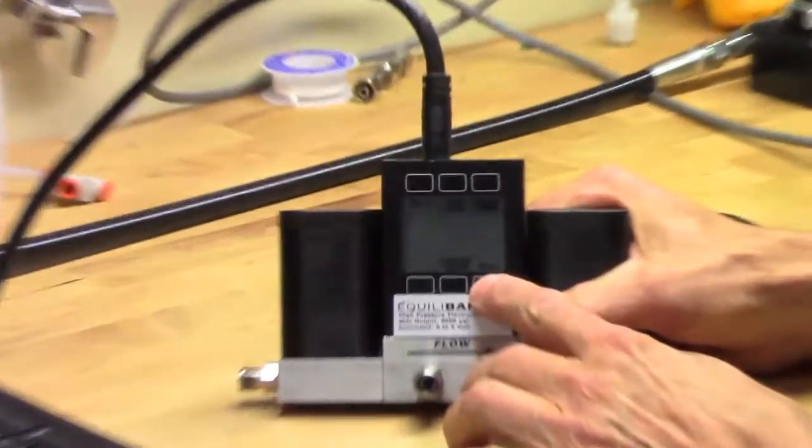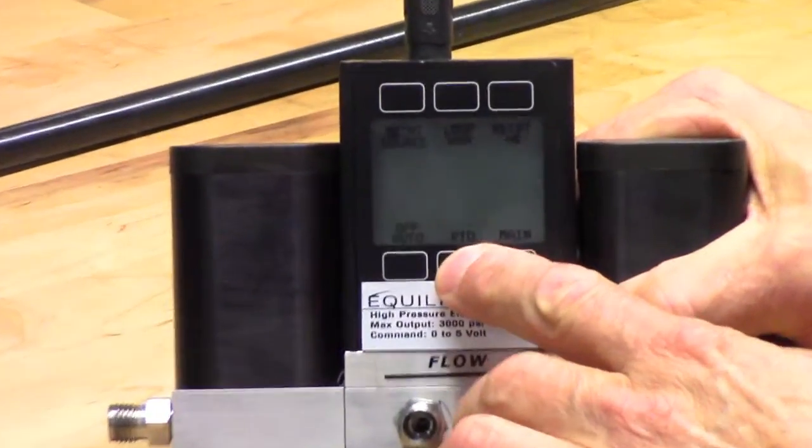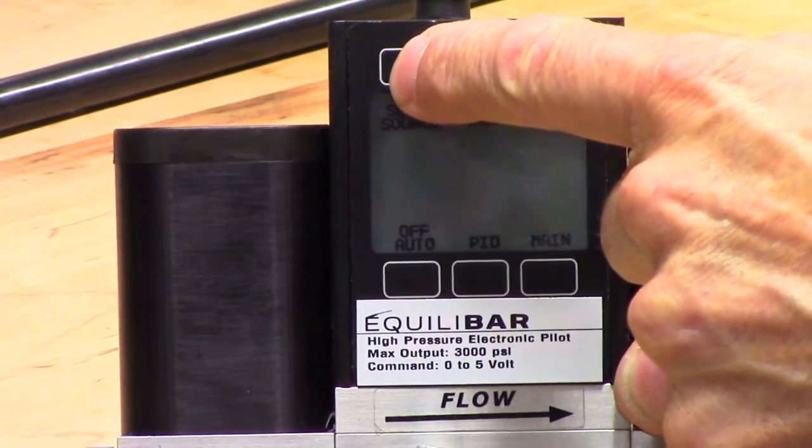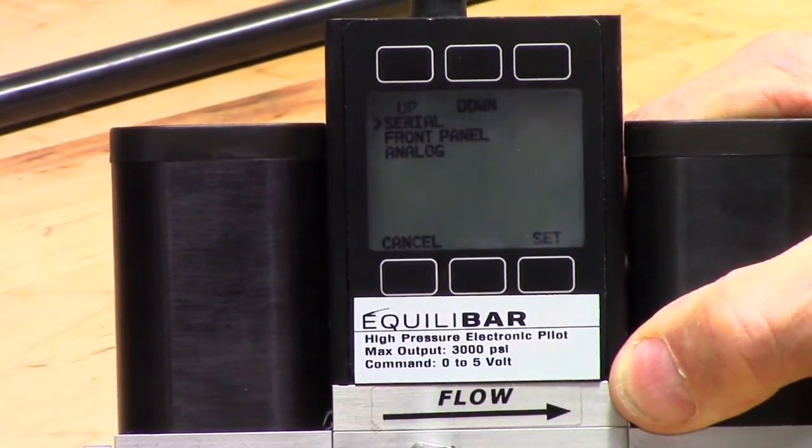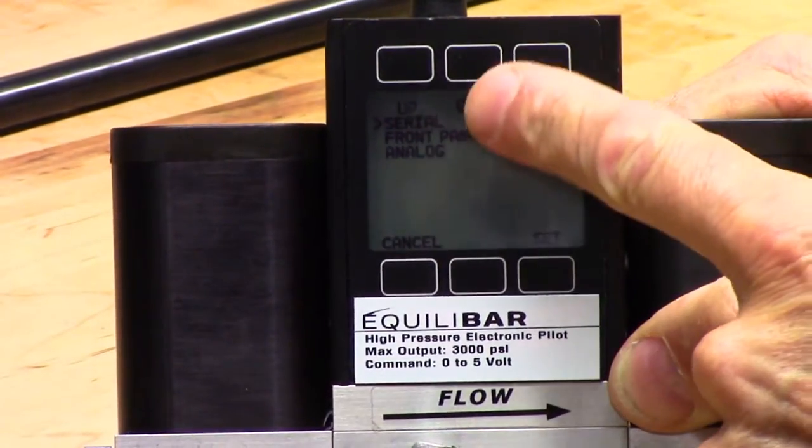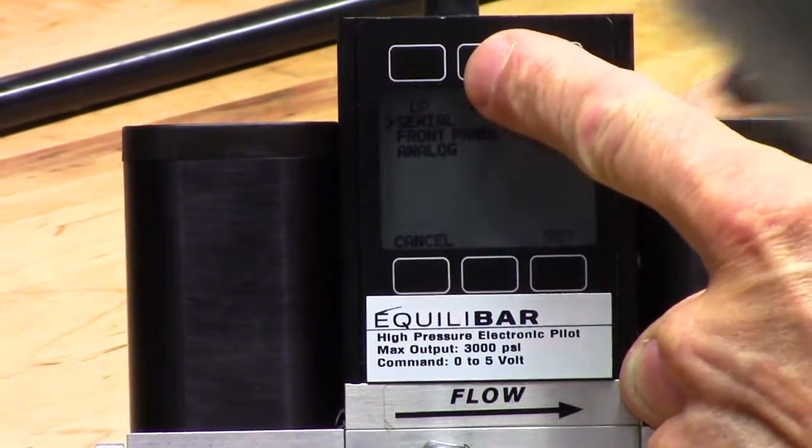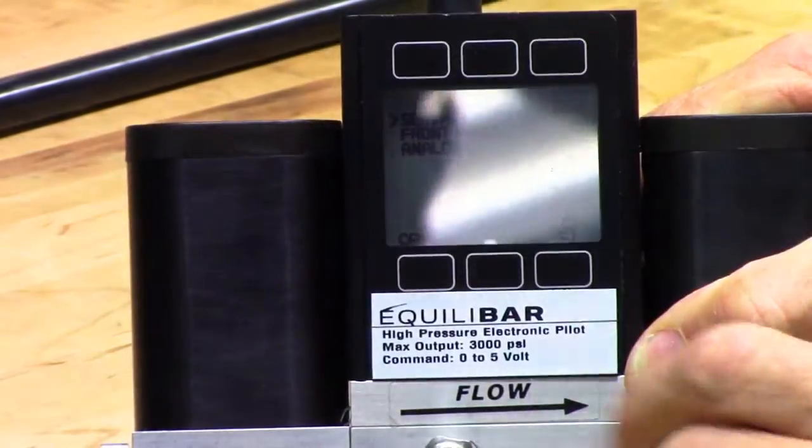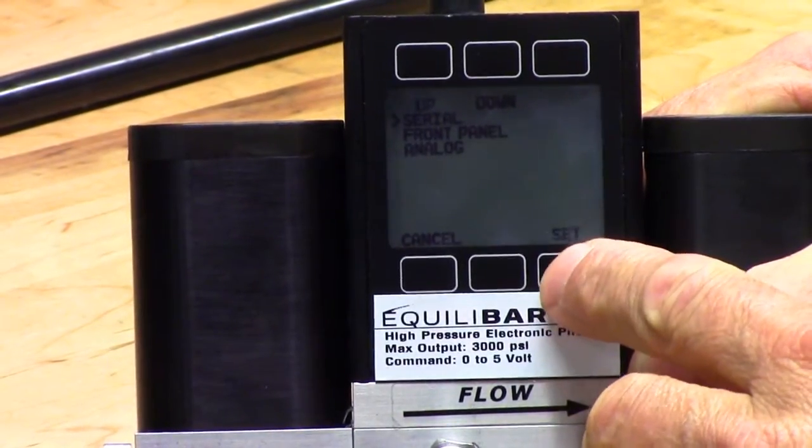First, you do that by pressing main, control setup, and then set point source, which is this button on the far right, far left, excuse me. And use up and down arrows to select RS-232 or serial. I'm going to select serial and press set.